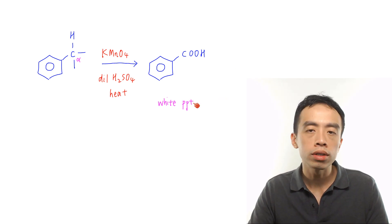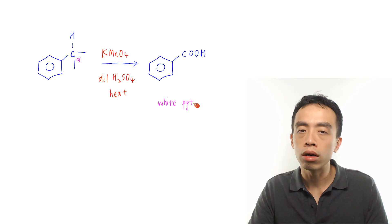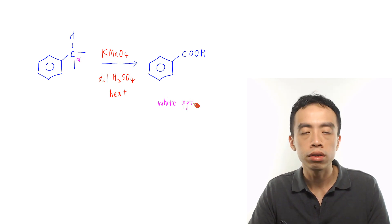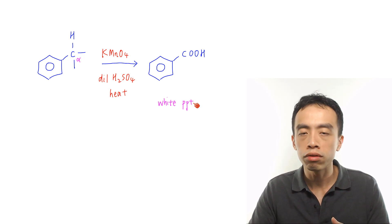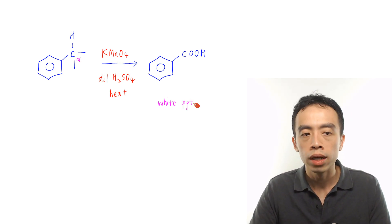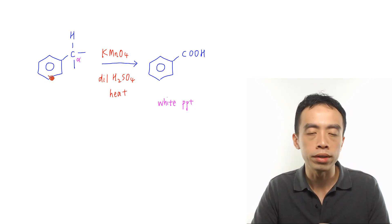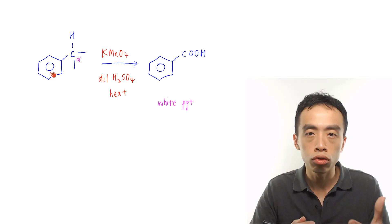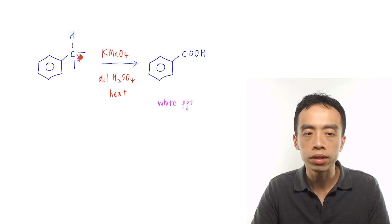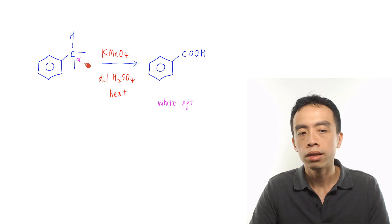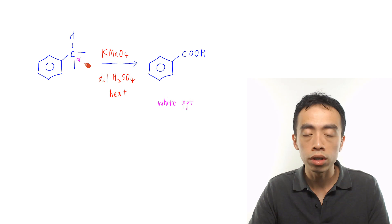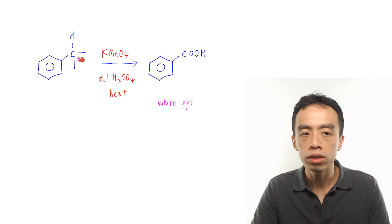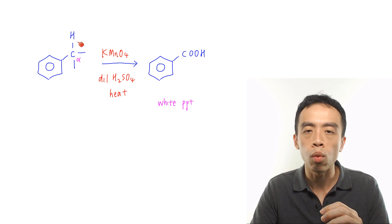This oxidation is not restricted to methyl benzene. In general, if you have an alkyl benzene with the right criteria, it can be oxidized to benzoic acid. The carbon directly attached to benzene is called the first carbon or the alpha carbon.